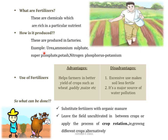Why do we need to use manure? Manure helps in retaining water level, holds the water capacity of the soil, makes the soil porous, and improves soil texture. It helps the roots to breathe easily and exchange gases, and it increases the number of friendly microbes and earthworms, which helps in loosening and turning the soil. Fertilizers are chemicals which are rich in particular nutrients, produced in factories. Examples include urea, ammonium sulfate, super phosphate, potash, and NPK (nitrogen, phosphorus, potassium). The advantage of fertilizers is that they help farmers achieve better yield of crops like wheat, paddy, and maize, whereas the disadvantage is that the chemicals make the soil less fertile and are a major source of water pollution.